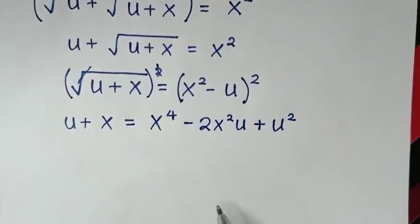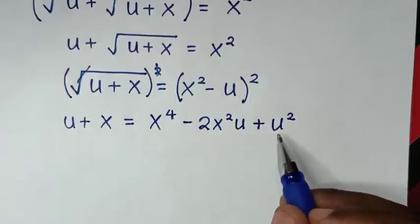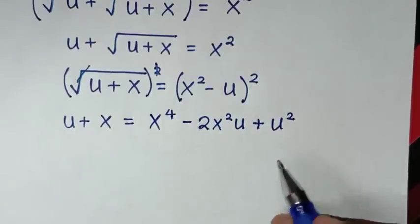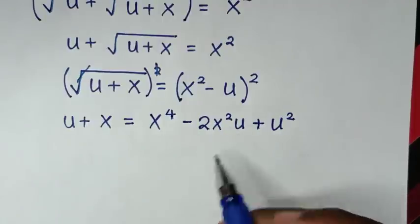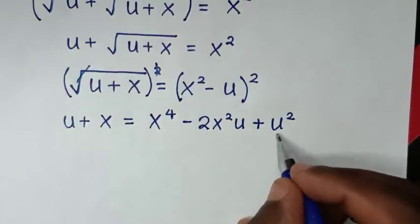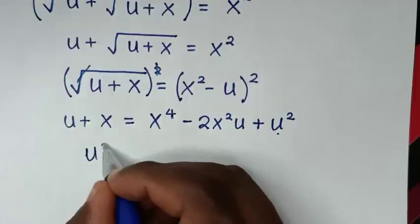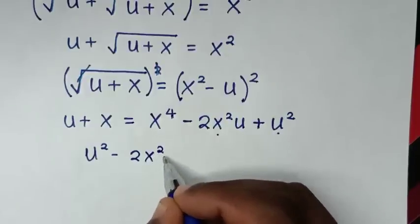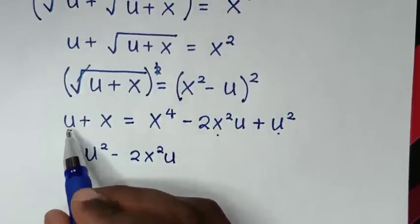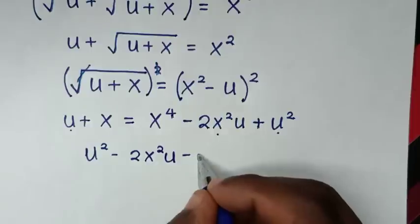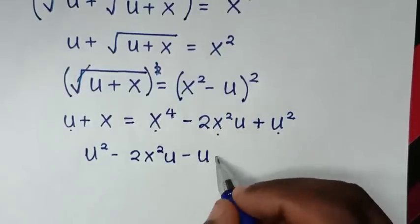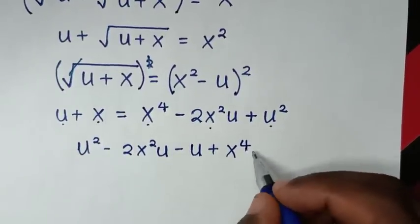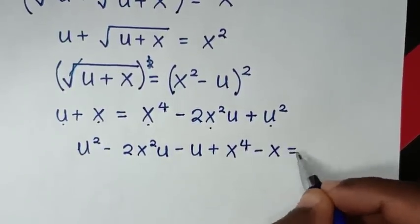In the next step, we rearrange this equation in terms of u to form a quadratic equation in u. We move terms: u squared, minus 2x squared times u, minus u, plus x to the power 4, minus x, equals 0.